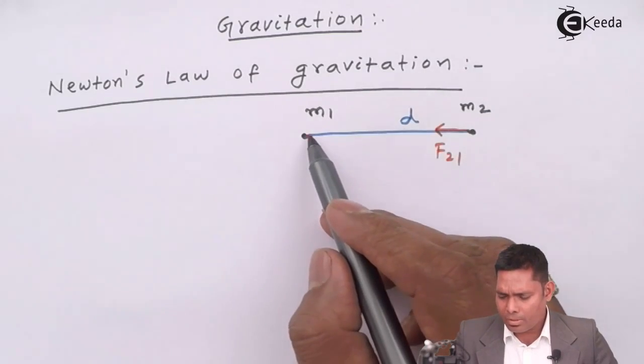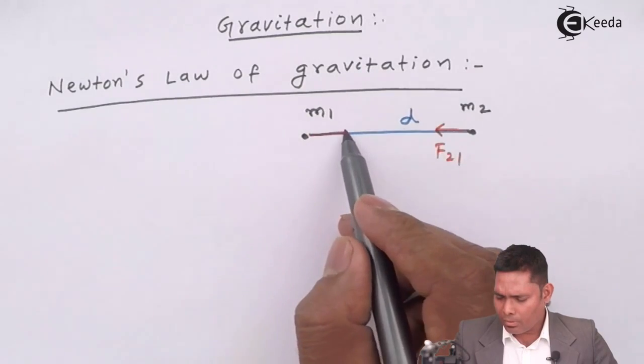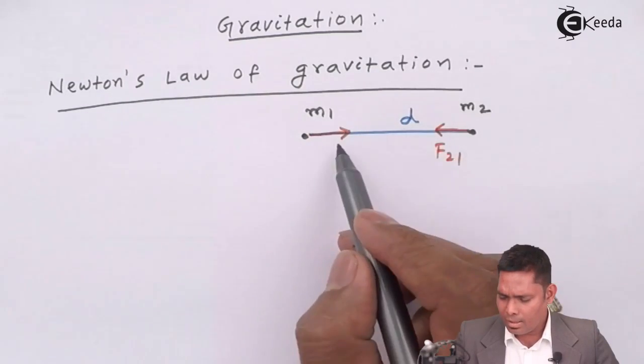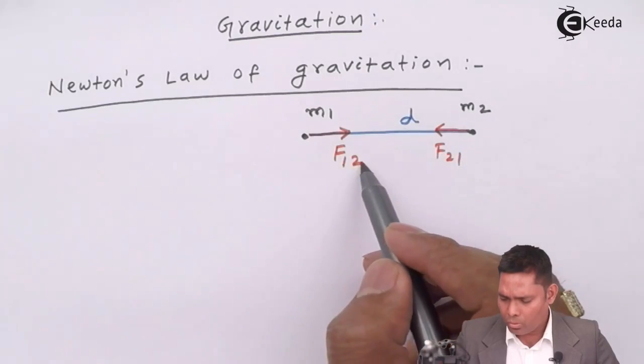Similarly, the force on M1 because of this M2, the force will be attractive and towards this side and that force is suppose F force on 1 due to 2.